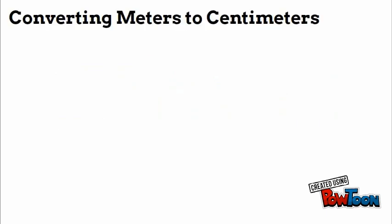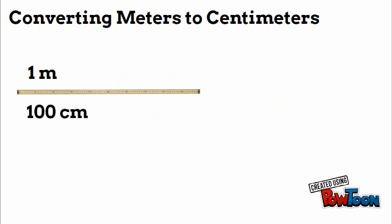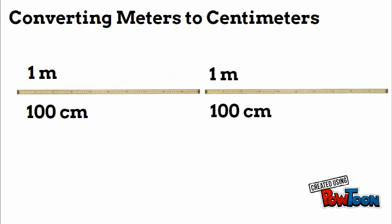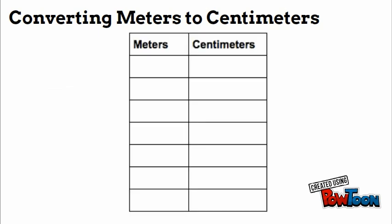Let's start with converting meters to centimeters. One meter is 100 centimeters. If we wanted to know what two meters were — adding another meter gives us another 100 centimeters — so two meters equals 200 centimeters. Let's look at this in table form: one meter is 100 centimeters.